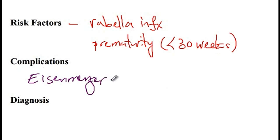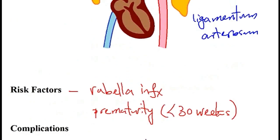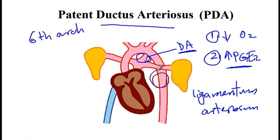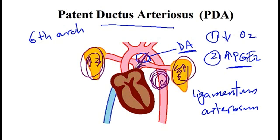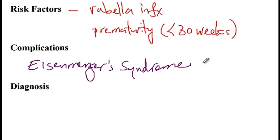A complication that can arise in PDA patients is Eisenmenger's syndrome. Initially, since there is higher blood pressure on the left side in the aorta, blood is diverted from the aorta towards the pulmonary trunk. Over time, however, the resistance of the pulmonary vessels increases due to excess blood flow, so the pressure on the right side becomes greater, and blood is now diverted back from the pulmonary trunk into the descending aorta. This reversal from left-to-right to right-to-left shunting is referred to as Eisenmenger's syndrome.